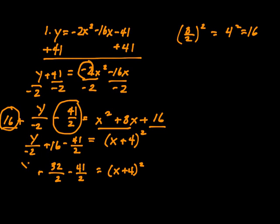And then I have y divided by negative 2. So I have y divided by negative 2 minus, that's going to be 9 over 2 now, equals x plus 4 squared.